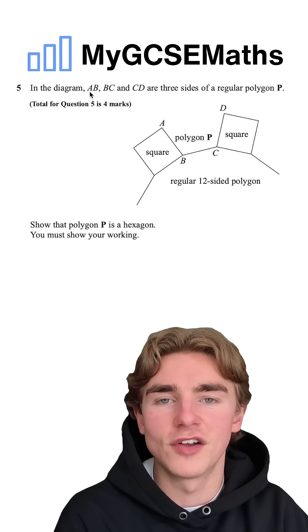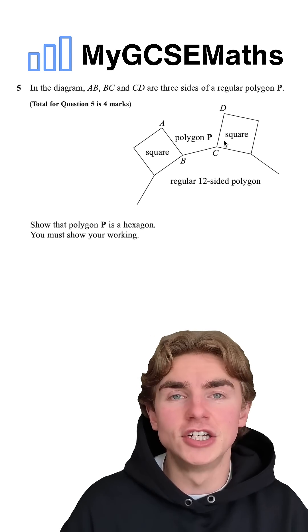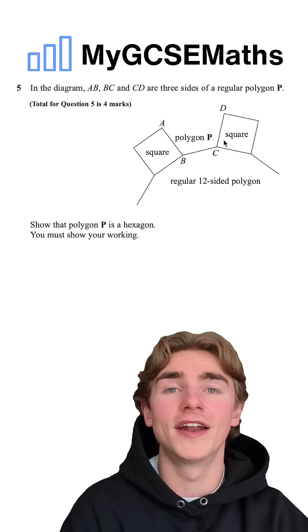You must show your working. So AB, which is this one here, BC, this one here, CD are three sides of a hexagon. Show that this is the case. How are we going to do it?